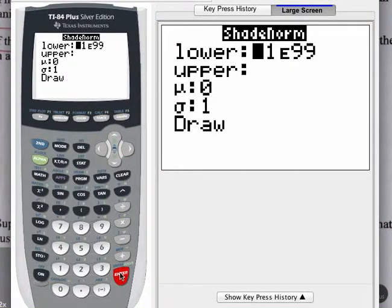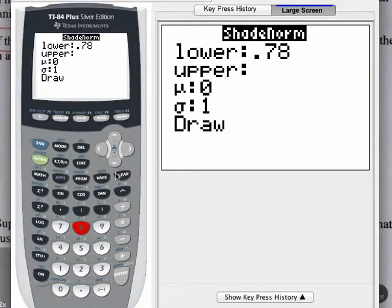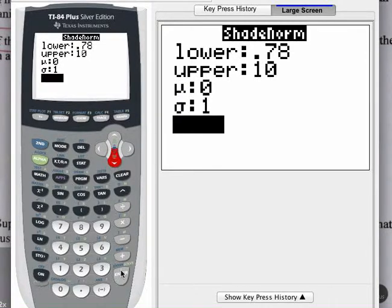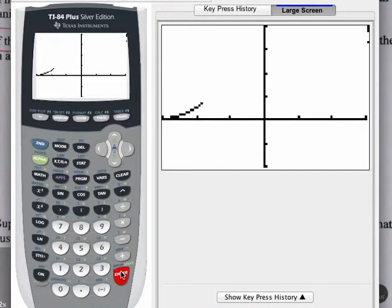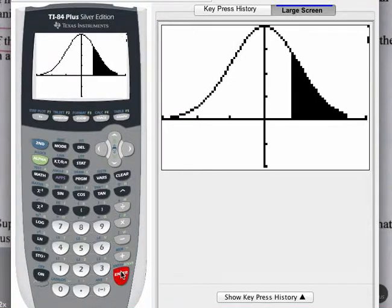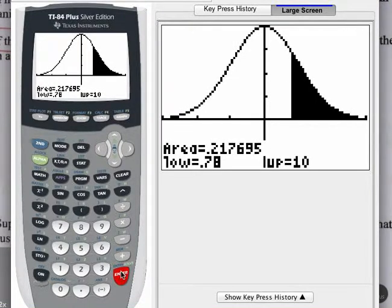Just as we mentioned before, the lower boundary is the z-score of 0.78. The upper boundary then we will use z-score of 10. That is high enough to get an accurate area. The z-scores have mean of 0 and standard deviation of 1, so we don't need to change those. Let's draw this then. This will give us the percentage that we are looking for. It's about 0.218.